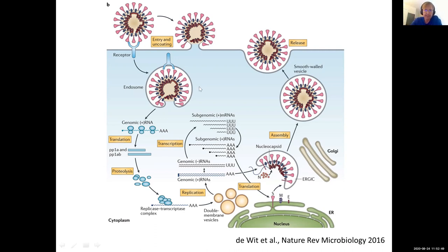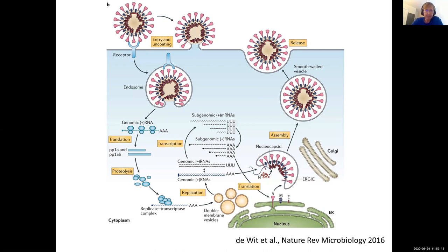If the virus can't fuse with the cell and get its RNA inside, nothing can happen — all the bad things happen inside the cell. The way it does this is by having a fusion protein, which is the spike protein on the surface. Many viruses have these. The virus tries to get the spike proteins close enough to a receptor on the cell surface called ACE2 in human cells. That interaction triggers a series of events that leads to pulling the membrane close and fusing them together.